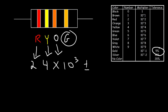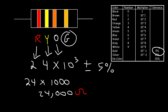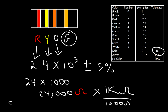So it's going to be plus or minus five percent. Now what is ten to the third? Ten to the third is ten times ten times ten, three times, or just a thousand. So twenty-four times a thousand is twenty-four thousand ohms. To convert it to kilo ohms, just divide by a thousand — one kilo ohm equals a thousand ohms. So this is twenty-four kilo ohms plus or minus five percent.